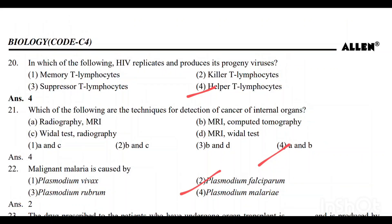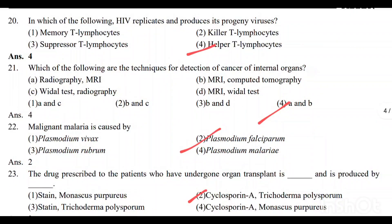Question number 20: HIV replicates and produces progeny viruses in helper T lymphocytes. Option 4 is the correct answer. Question number 21: Which of the following are the techniques for detection of cancer of internal organs? Option 4 — A and B: Radiography and computed tomography — is the correct answer.